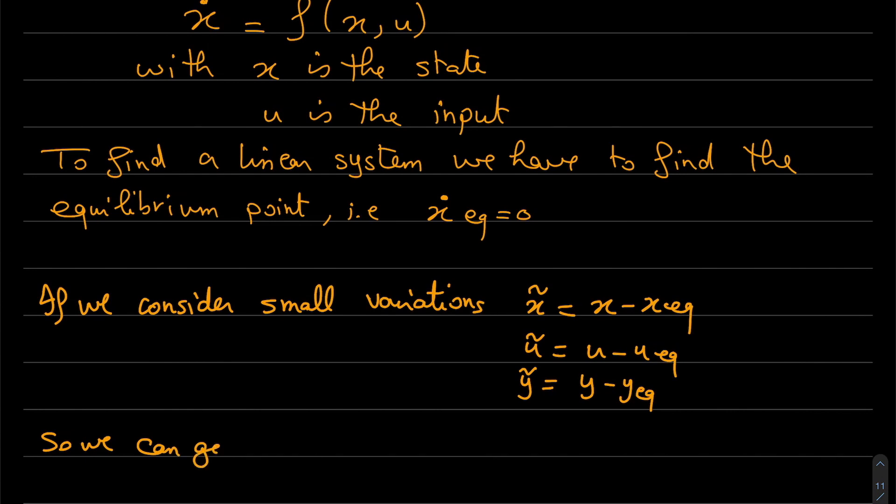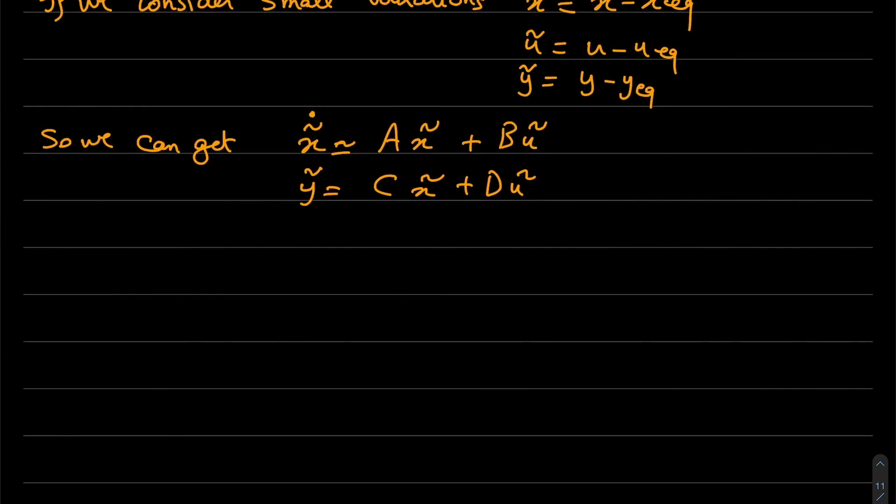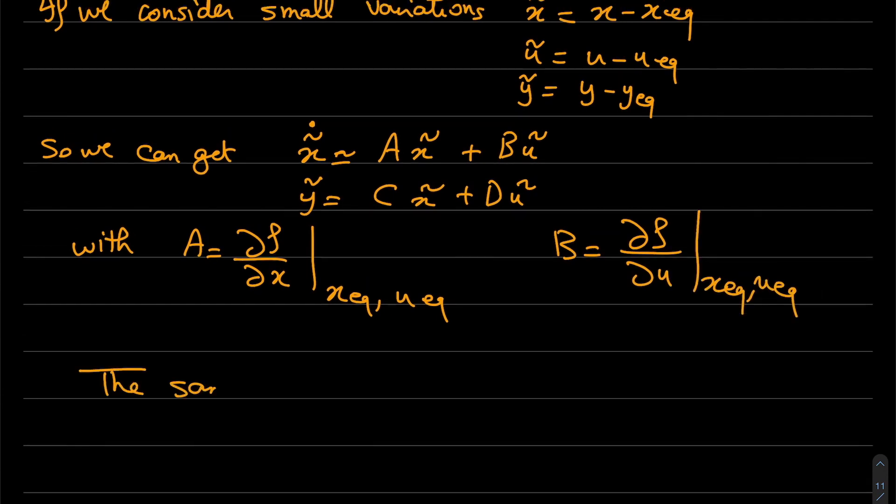We can get the small variations: x_dot_delta equal A x_delta plus B u_delta, and the variations of the output equal C x_delta plus D u_delta. To find A, we apply the Jacobian and replace the equilibrium point. For finding B, we find the Jacobian with respect to u and also replace the equilibrium point. The same idea can be used to find C and D.